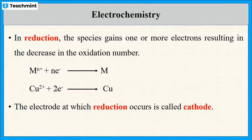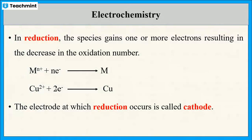The electrode where the reduction reaction is observed acts as the cathode. So during oxidation, removal of electrons and increase in oxidation number takes place, while during reduction, addition of electrons and decrease in oxidation number takes place.